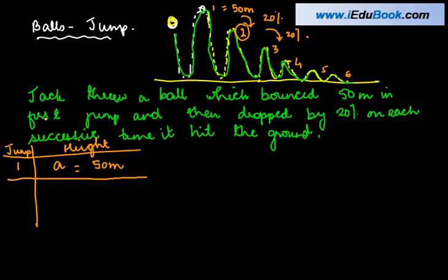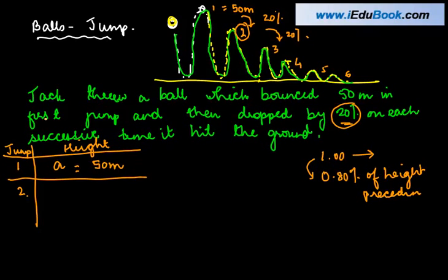The second time the ball was jumping, it came down by 20%. We know 100% is equal to 1. If it came down by 20%, that means how much did it jump? It jumped 0.80 or 80% of the first jump. So the height is basically 80% of the preceding height. Or we can simply write this as 50 into 0.8.